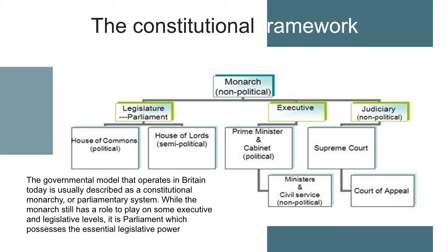The executive comprises the sitting government in its cabinet, together with government ministers or departments headed by ministers or secretaries of state, who all act formally in the name of the monarch. The judiciary is composed mainly of the judges of the higher courts, who determine the common law and interpret acts of Parliament. The judiciary is supposed to be independent of the legislative and executive branches of government.